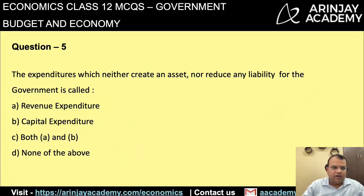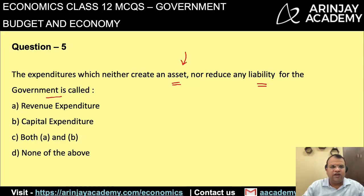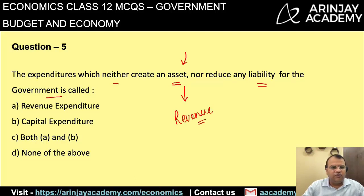Question 5: the expenditures which neither create an asset nor reduce any liability for the government is called? We know that an asset is created when an expenditure is capital in nature. Therefore, if an expenditure is not creating an asset, it would be a revenue expenditure. The correct answer is A, revenue expenditure.